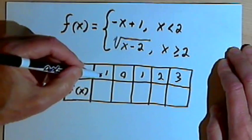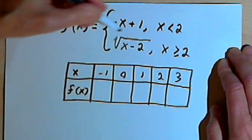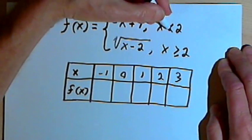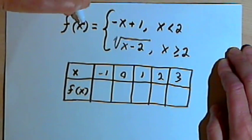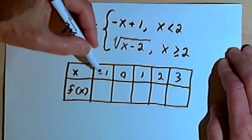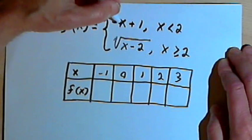Starting with x equaling negative 1. When x is equal to negative 1, then x is less than 2. So I'm going to use this first line here, the first set of instructions. That tells me to take the x, which is negative 1, and plug it into this, negative x plus 1.